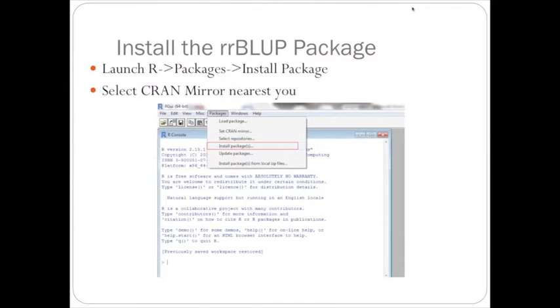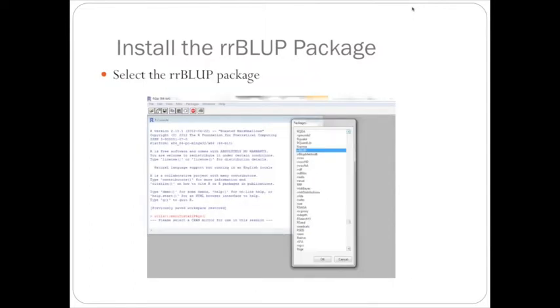So, to install the package, especially for the people for the first time that they're using R, you have to launch R, go to the Packages menu, and then Install Package, and then select the CRAN mirror nearest you. A lot of locations will show up, so just select where you are. Then, a list of packages that are available on CRAN will show up, and select rrBLUP, and then hit OK.